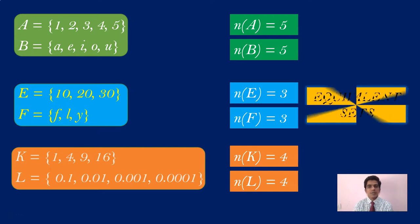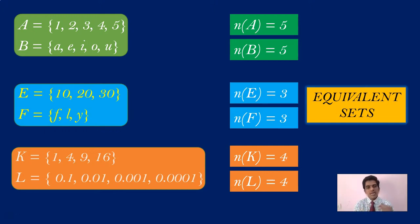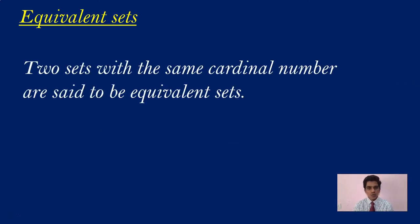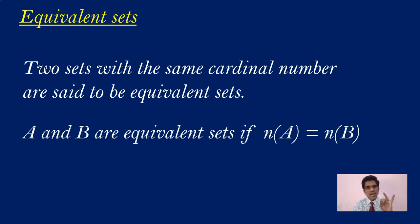Such sets with the same cardinal number are called equivalent sets. If two sets have the same number of elements — whether one has numbers, the other has alphabets, fractions, or names — it doesn't matter. If the number of elements is equal and the cardinal numbers are the same, then the two sets are equivalent. For two sets A and B to be equivalent, n(A) must equal n(B).